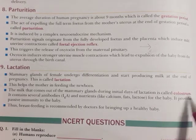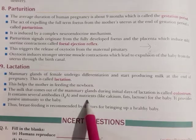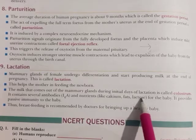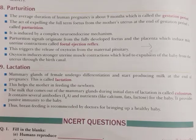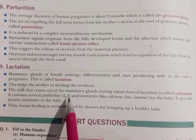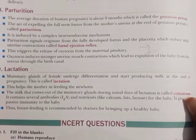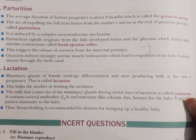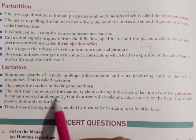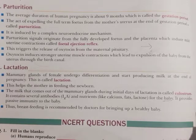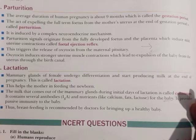Colostrum is very important and useful for the baby because it contains nutrients such as calcium, fats, and lactose. Additionally, it contains antibodies — specifically IgA — which are present in the colostrum. These antibodies are formed in the mother's body and go directly into the baby's body, providing passive immunity to the newborn.